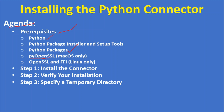Please note that as part of this video I am going to install the Python connector on Windows operating system, so I am not going to talk about the Mac and Linux topics. Once you have everything as part of the prerequisites, these are the three steps: step one, install the connector; step two, verify your installation by running sample Python code that connects to the Snowflake database; step three, specify a temporary directory.